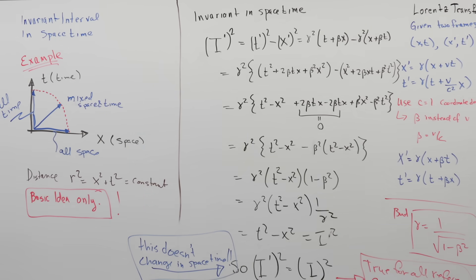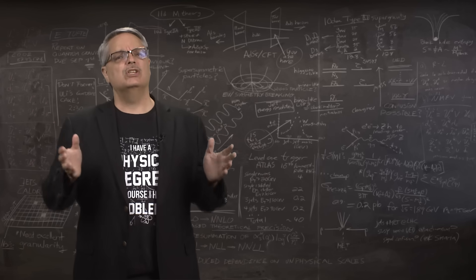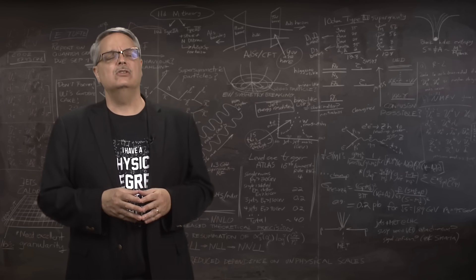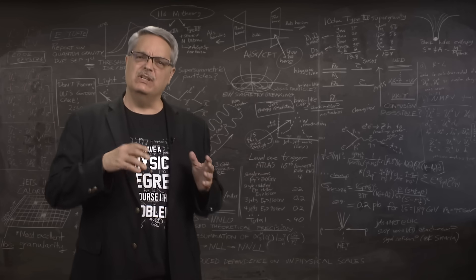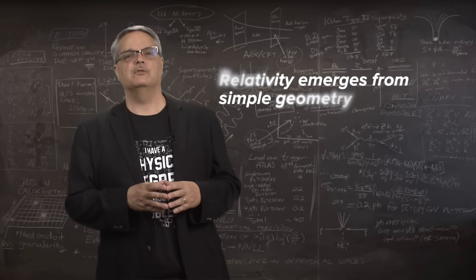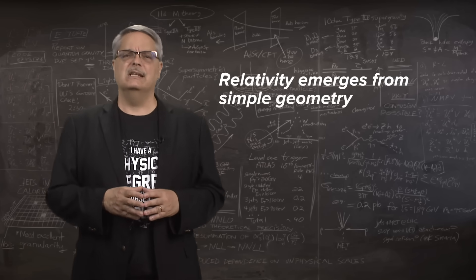However, that then leaves an open question. Just why is it that you can't go faster than the speed of light? It turns out to be due to a combination of a deep and fundamental property of the universe and fairly simple geometry. So let me explain how that all works.